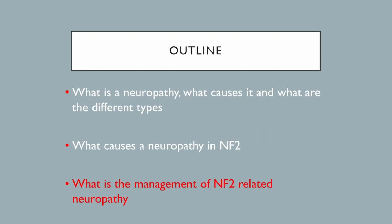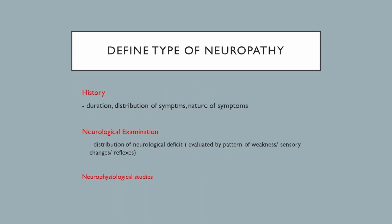Regarding management of peripheral neuropathy in clinic: the first important step is to define what kind of neuropathy the patient has. Is it a polyneuropathy or a mononeuropathy? If it's a mononeuropathy, identify whether there's a tumor causing it. We do this by taking a history, examining the patient, and sometimes performing electrical studies of the nerves.